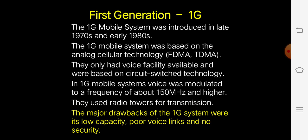Coming to the first generation mobile systems, which were introduced in the 1970s and early 1980s: the 1G mobile system was based on analog cellular technology — that is frequency division multiplexing and time division multiple access. They only had voice facility and were based on circuit-switched technology. Voice was modulated to a frequency of about 150 MHz and higher, and they used radio towers for transmission. The major drawbacks of 1G were low capacity, poor voice links, and no security.